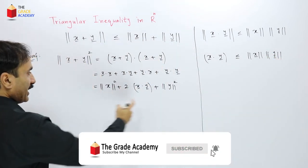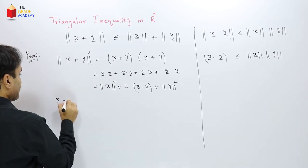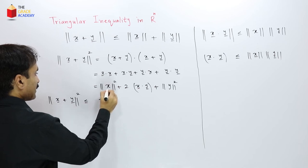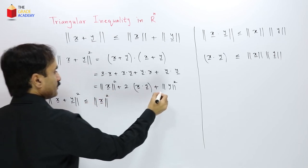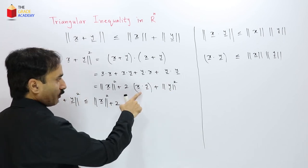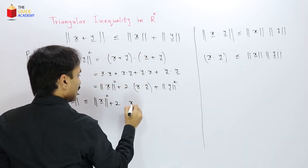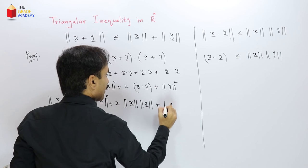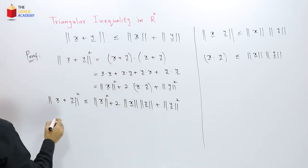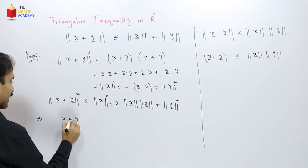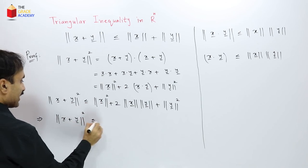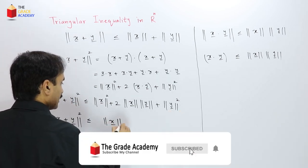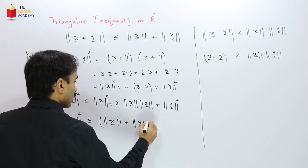If we use this in our expression, we can write ‖x+y‖² ≤ ‖x‖² + 2‖x‖‖y‖ + ‖y‖². This implies ‖x+y‖² ≤ (‖x‖ + ‖y‖)², since the right-hand side can be written in the form of a whole square: norm of x plus norm of y, whole squared.